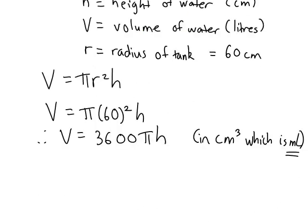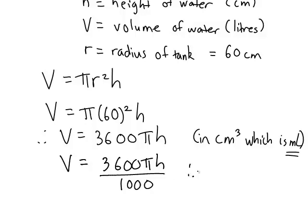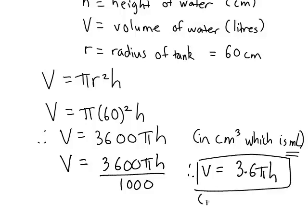And there are 1000 milliliters in a liter, so to get this in terms of liters, we could actually divide this side here by 1000, which therefore tells us that V is equal to 3.6 π h, where it is then given in liters. And h is still given here in centimeters. So that will be the required formula to relate our quantities in the required units.